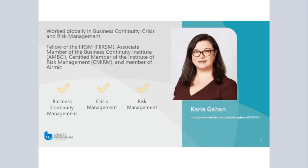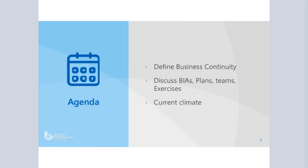Today we're going to be talking about a couple of things. We're going to put some definition around business continuity and give you clear guidance as to what it is and what it isn't. We're then going to discuss some of the processes that sit under the business continuity management framework — business impact analysis, plans, teams, and exercises — and briefly touch on the current climate and some ideas around what we should be doing right now.